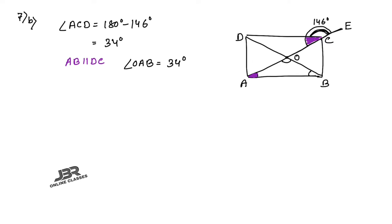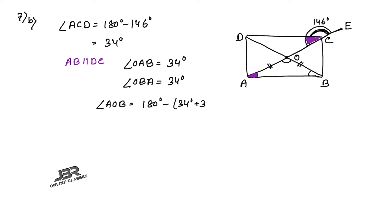Next, find angle OBA and angle AOB. In a rectangle, the diagonals bisect each other, so OA = OB. Triangle OAB is isosceles, so angle OBA = 34° as well. Since both base angles are 34°, angle AOB = 180 − (34 + 34) = 180 − 68 = 112°, which is the final answer.